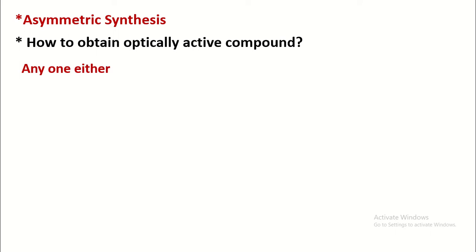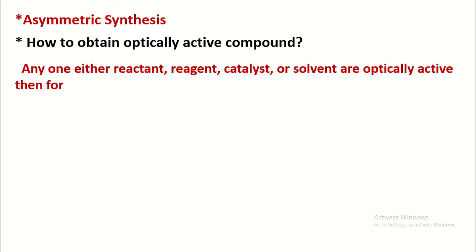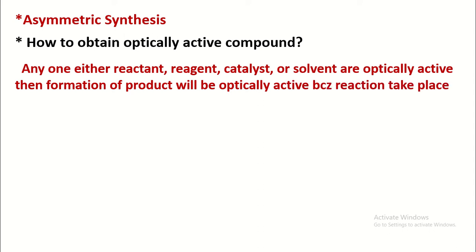Asymmetric synthesis means the synthesis of optically active compounds. How to synthesize optically active compounds? It is very simple. In a reaction, if anyone either reactant, reagent, catalyst, or solvent is optically active, then formation of product will be optically active because the reaction takes place through diastereomeric transition state or diastereomeric phase.